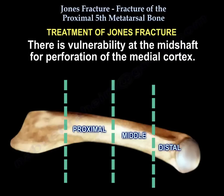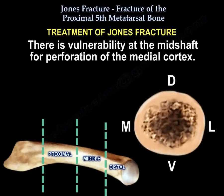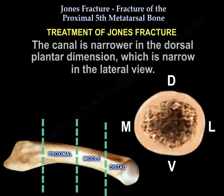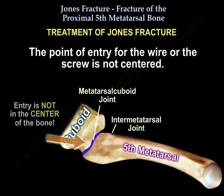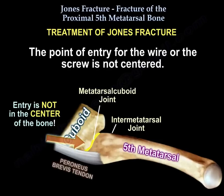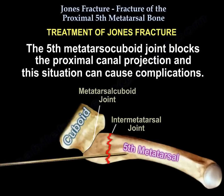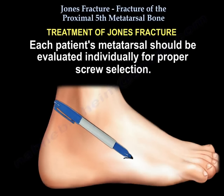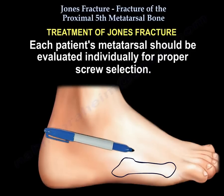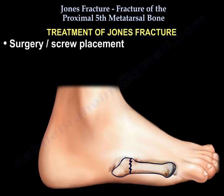There is vulnerability at the mid-shaft for perforation of the medial cortex. The canal is narrower in the dorsal-plantar dimension, which appears narrow on the lateral view. The point of entry for the wire or screw is not centered, and the 5th metatarsal cuboid joint blocks the proximal canal projection, which can cause complications. Each patient's metatarsal should be evaluated individually for proper screw selection, surgery, and screw placement.